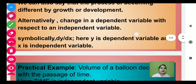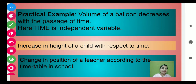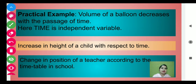Now, next are practical examples. Volume of a balloon decreases with the passage of time. Suppose aap ek balloon lekar aate hain market se, jo completely filled hai air se. With the passage of time, jo volume hoga balloon ka, woh decrease hona start ho jayega. Here time is the independent variable. Jo change hota hai — rate of change — that is the derivative. Differentiation ka aur derivatives ka — both are same.